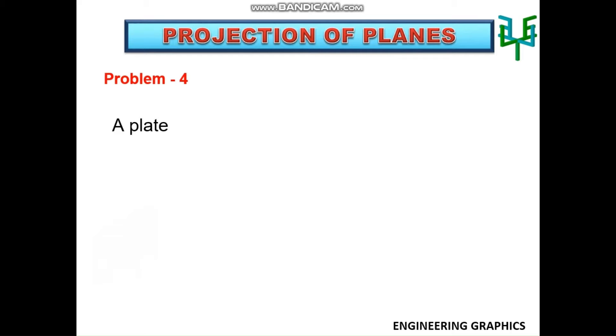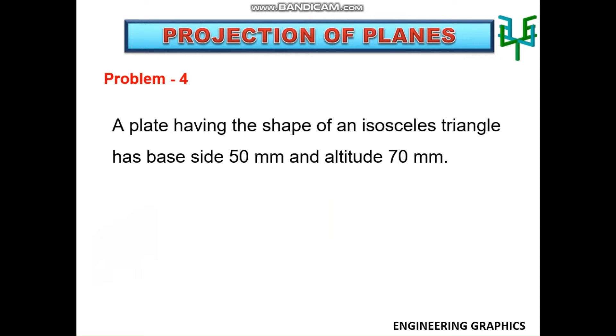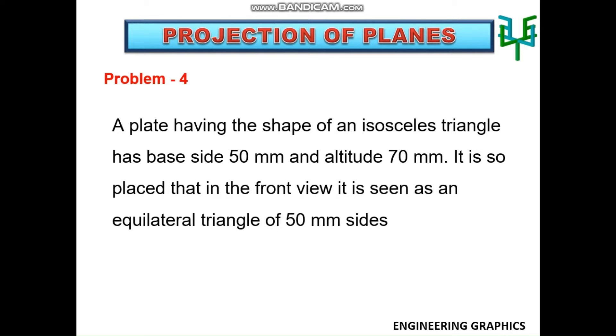A plate having the shape of an isosceles triangle has base side 50 mm and altitude 70 mm. It is so placed that in the front view it is seen as an equilateral triangle of side 50 mm, and one side inclined at 45 degrees to HP. Draw its top view.